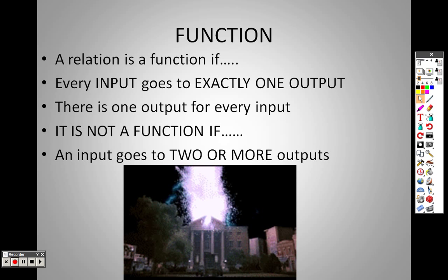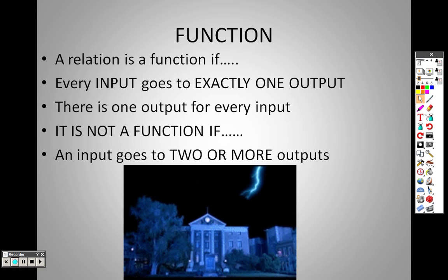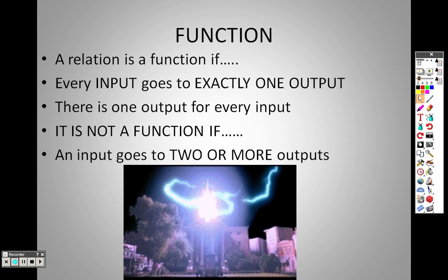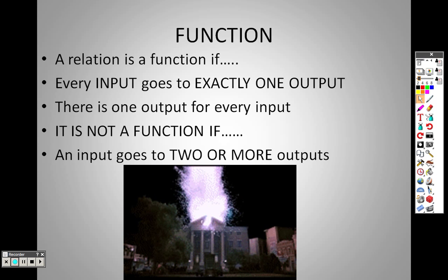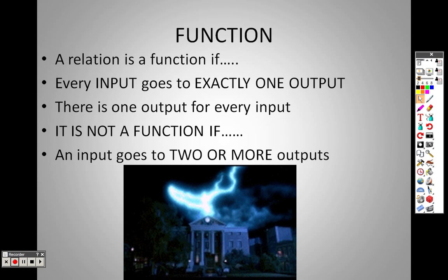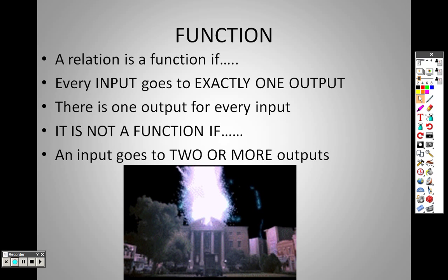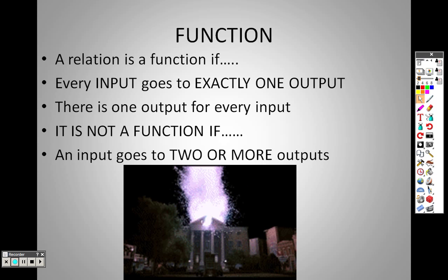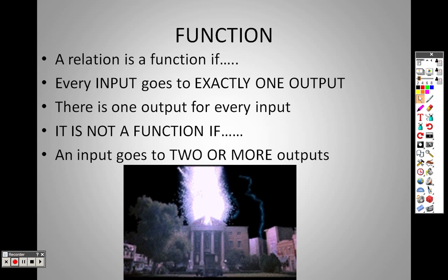It is not a function if an input goes to two or more outputs. So if I plug a number in and it gives me two different answers, that's not a function. An example of that might be something like a square root. The square root of four — if I plug in a four, I get two and negative two. I actually get two answers there. So something like that would not be a function because it's getting positive and negative answers.